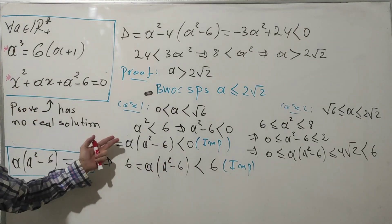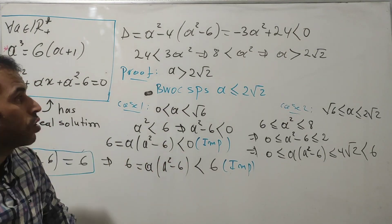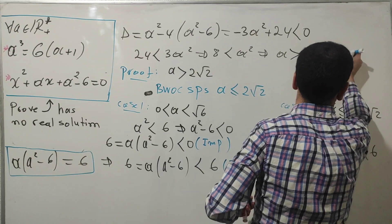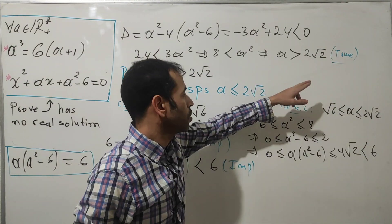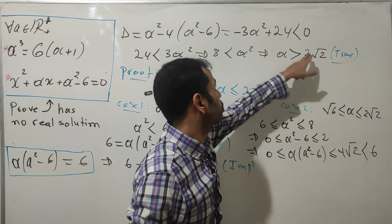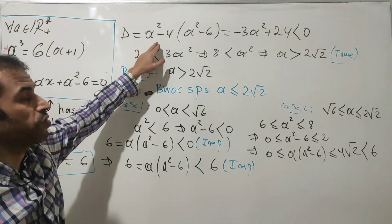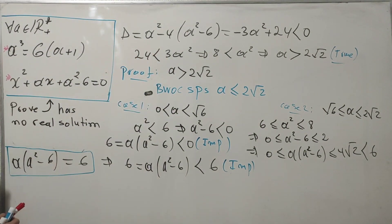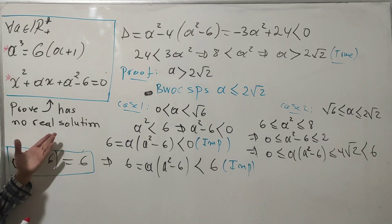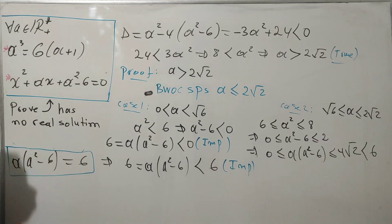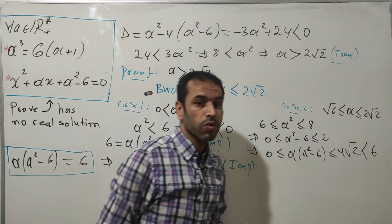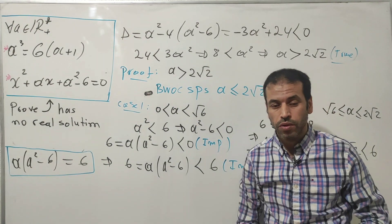Both cases lead to a contradiction, so our assumption was false. Therefore a is strictly greater than 2√2, which means Δ is negative, which means the equation x² + ax + a² - 6 = 0 has no real solutions — it only accepts solutions in complex numbers. Problem solved. Thank you for watching, see you in the next video.